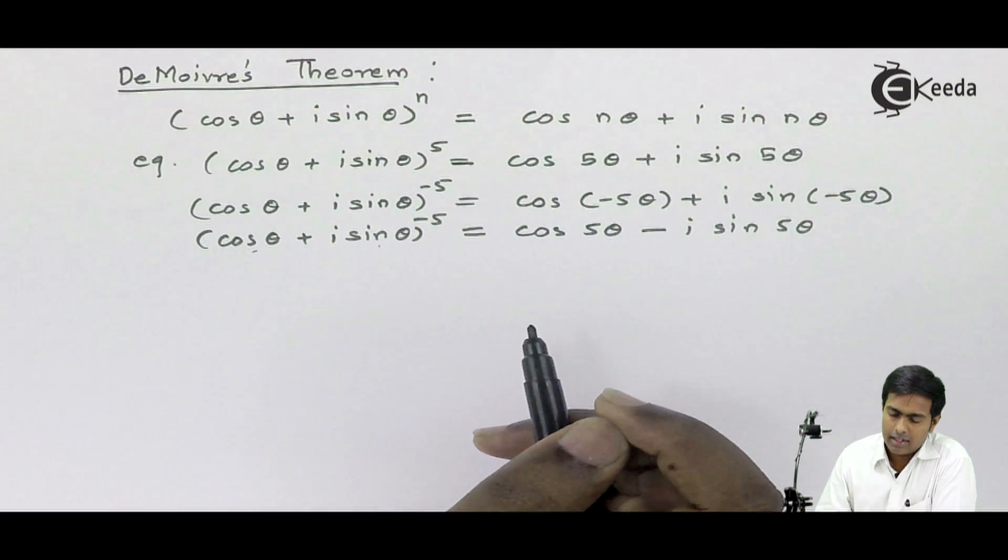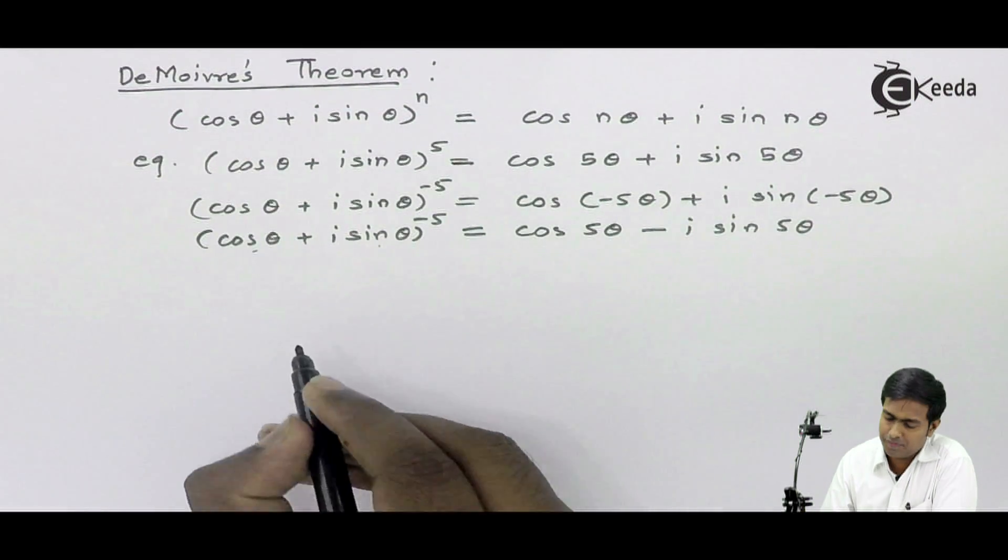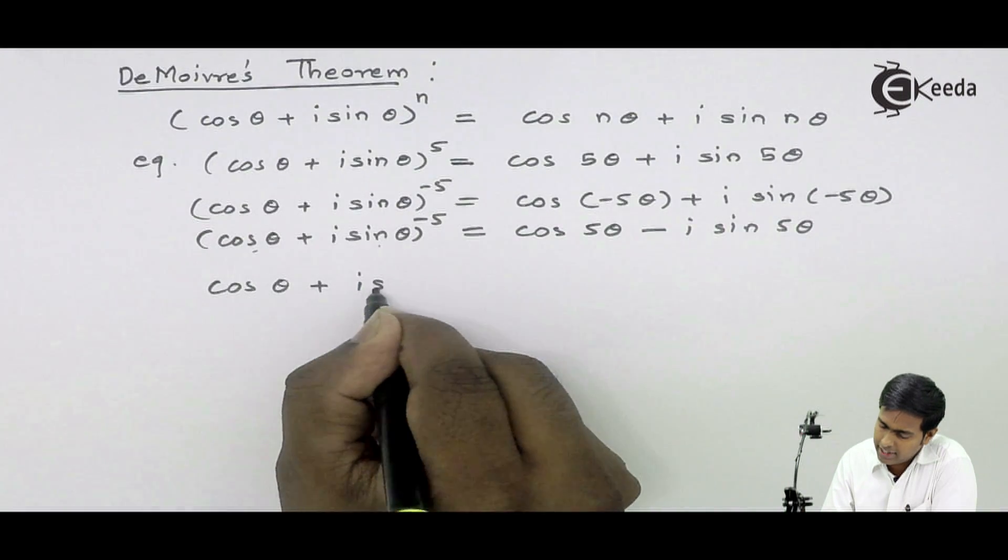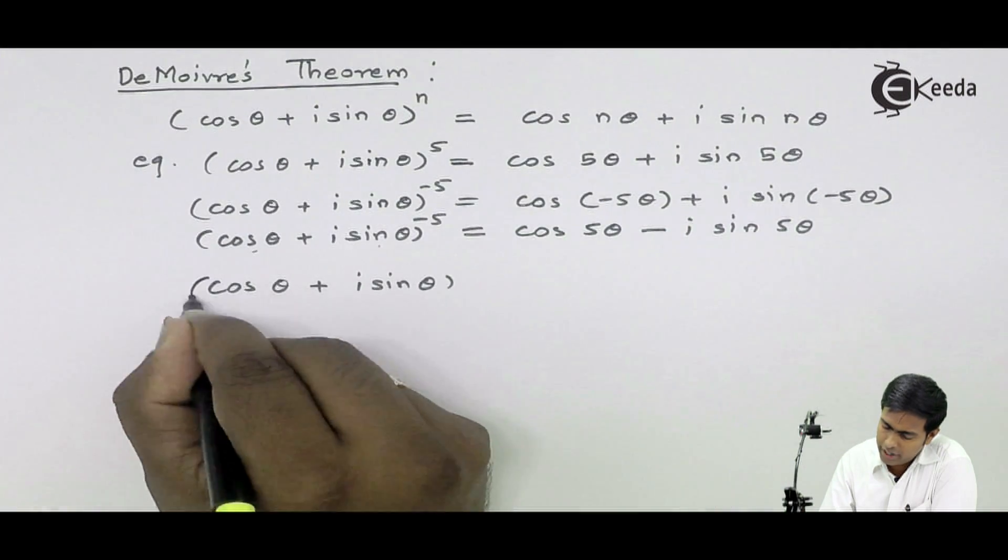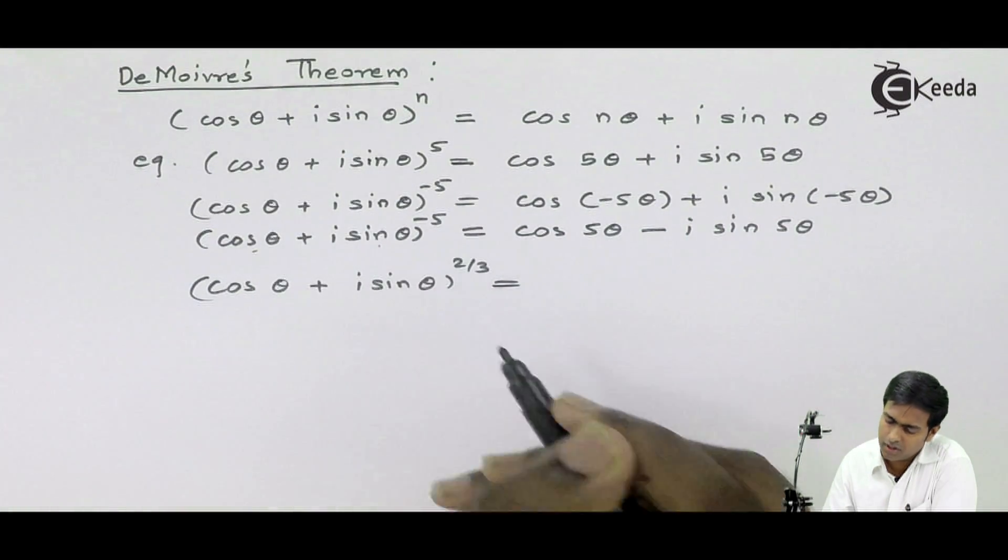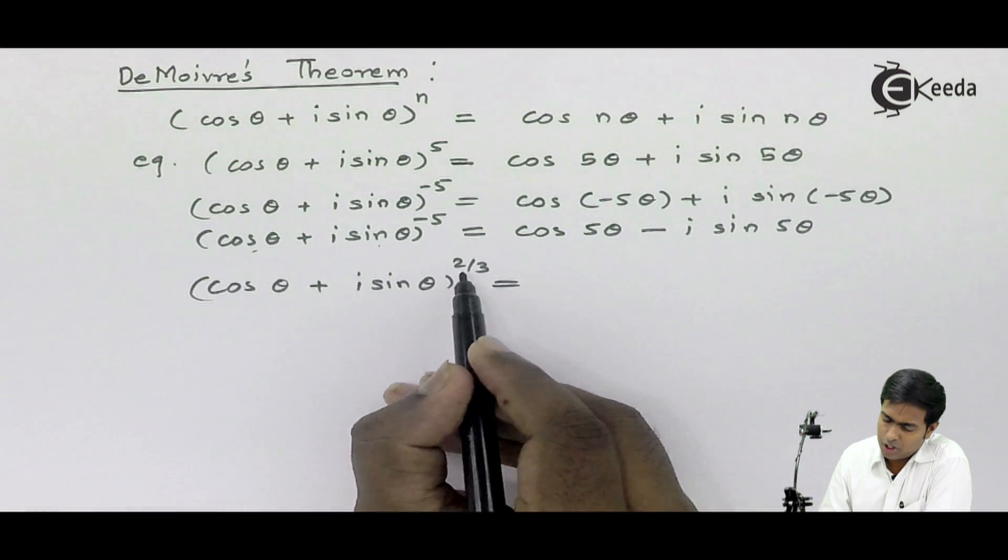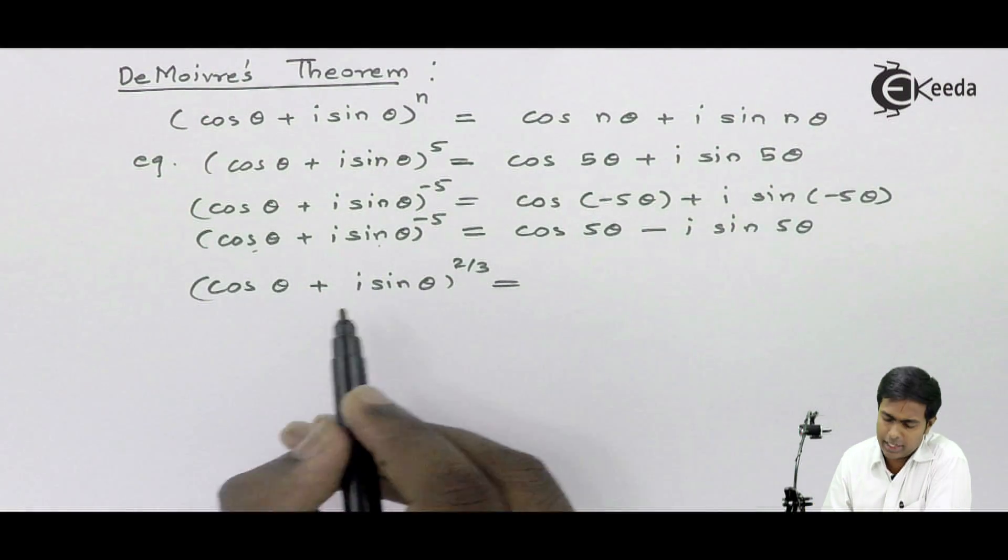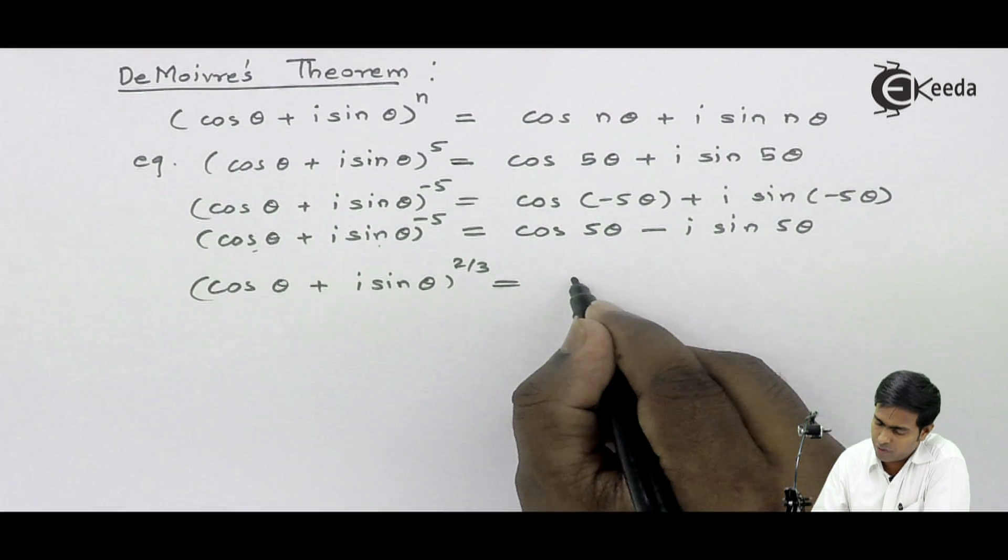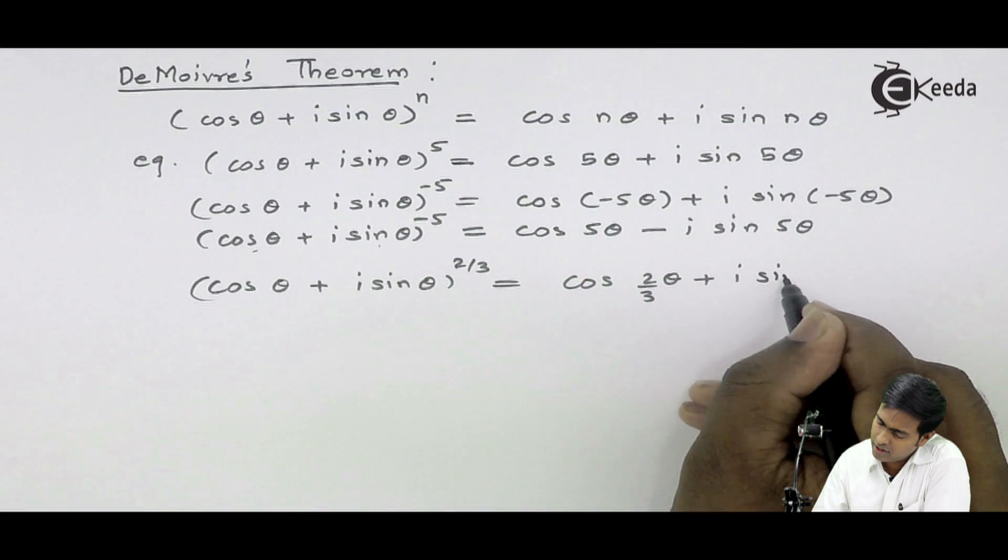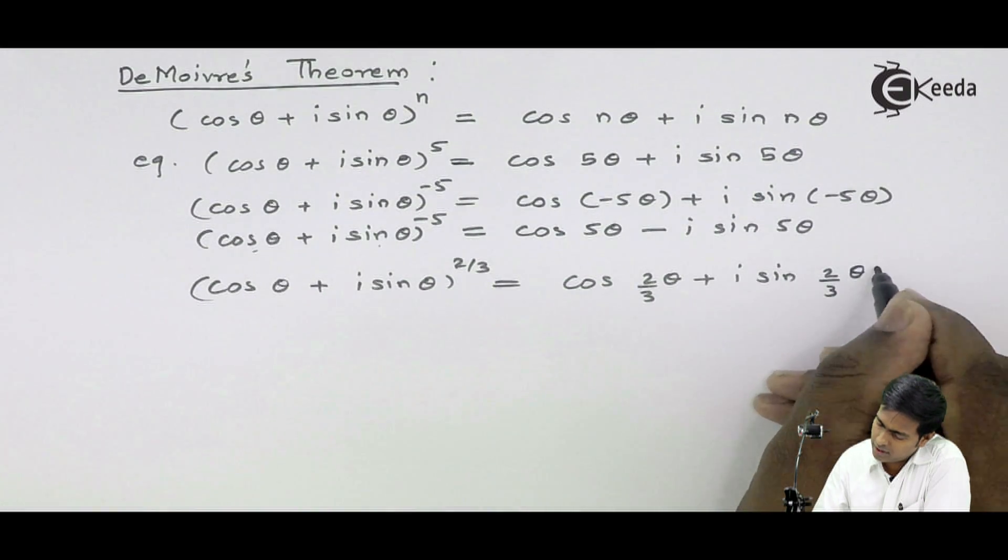Now let's take a fraction. If it is (cos θ + i sin θ) raised to 2/3, what will happen? Same rule—2/3 will multiply this θ. So it will become cos(2θ/3) + i sin(2θ/3).